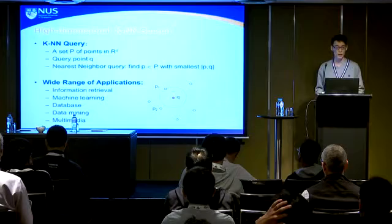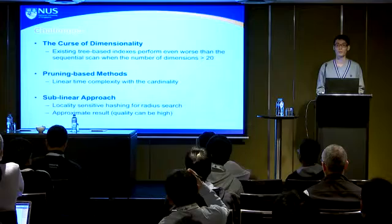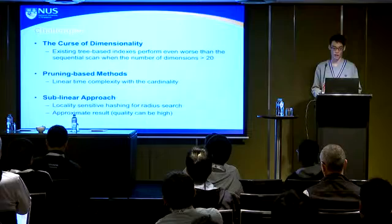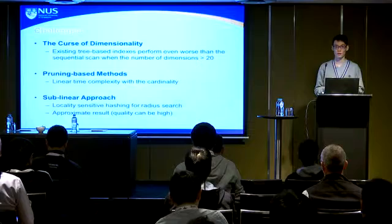This problem is in fact very hard, due to the curse of dimensionality. We found that all existing tree-based indexes perform even worse than linear scan when the dimensionality is larger than 20. There is also a proof showing that if you want to do exact KNN search or radius search in the high-dimensional case, we cannot do better than linear scan.